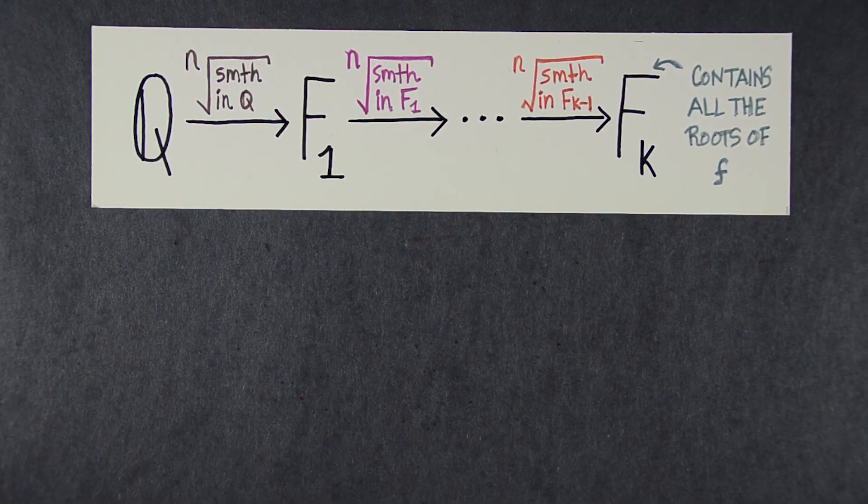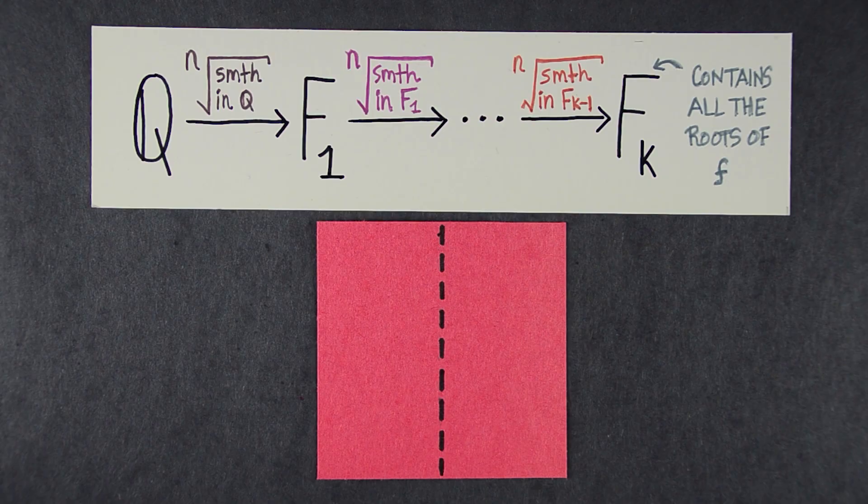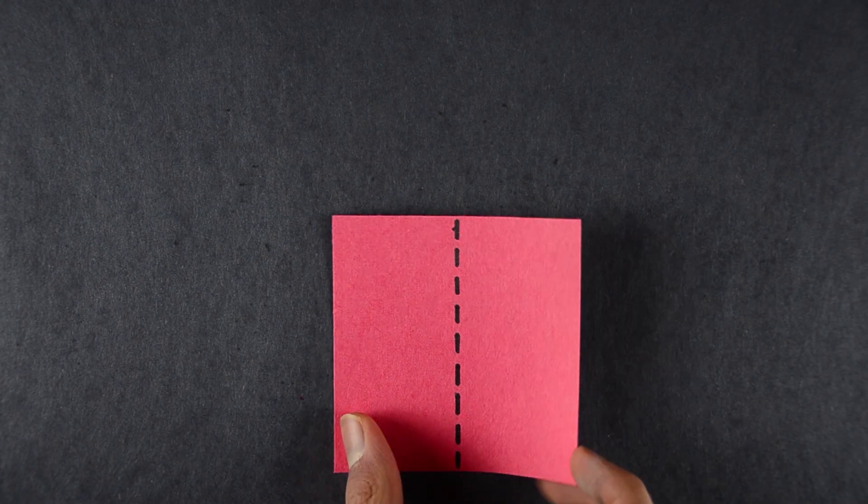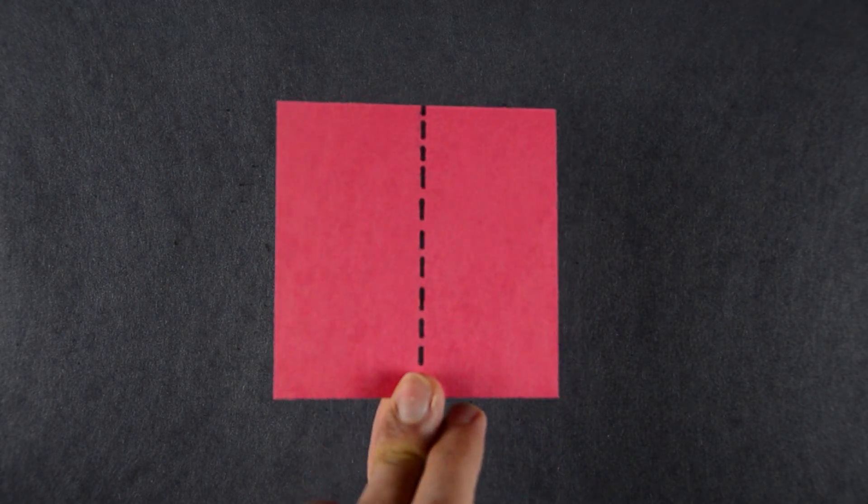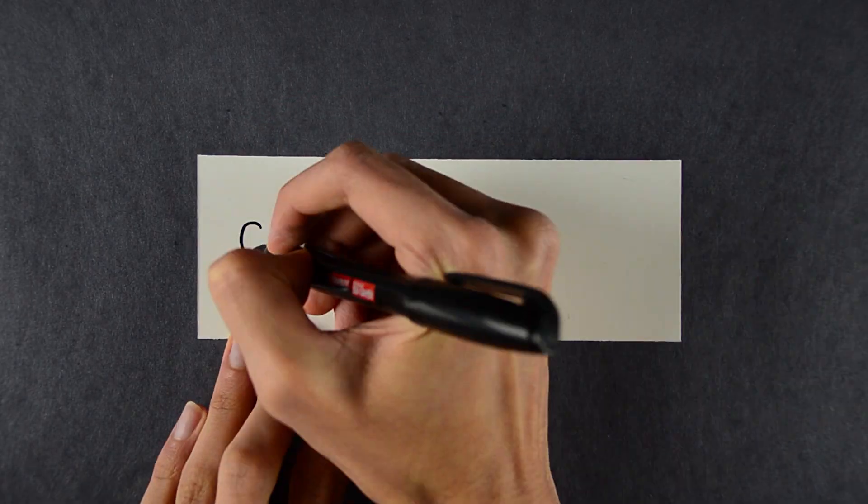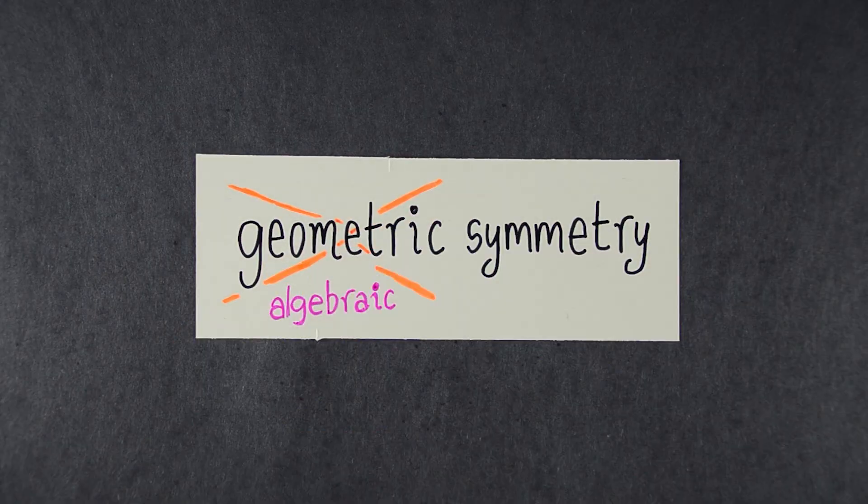The main insight of Galois theory is to convert problems about fields into problems about symmetry. We all know what symmetry means intuitively. This square is symmetric about this axis because when you flip it, it looks the same. The key leap is to go from geometric symmetry to algebraic symmetry.